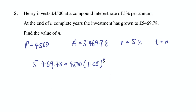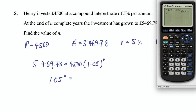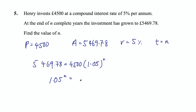Using our formula: 5,469.78 = 4,500 × 1.05^n. To solve for n, divide both sides by 4,500, giving 1.05^n = 5,469.78 ÷ 4,500 ≈ 1.2155. At GCSE level we don't use logs — we use trial and error to find which power of 1.05 gives approximately 1.2155.